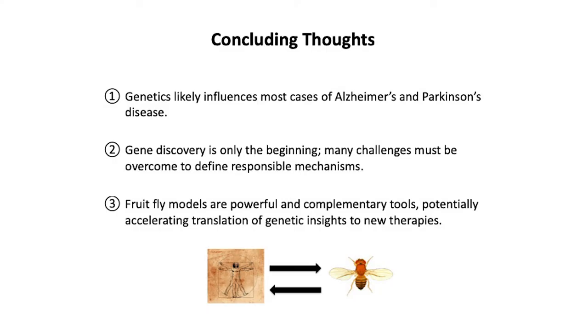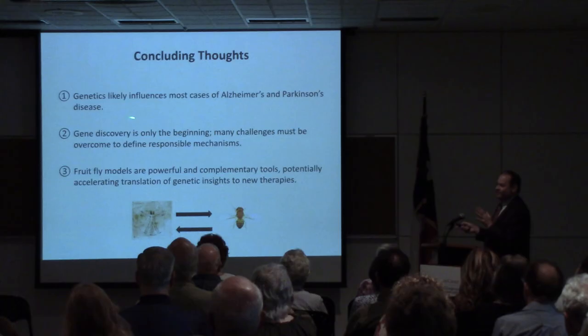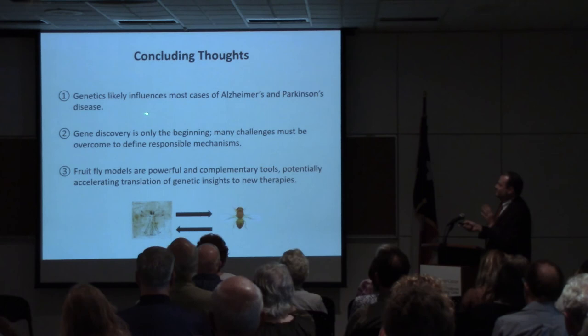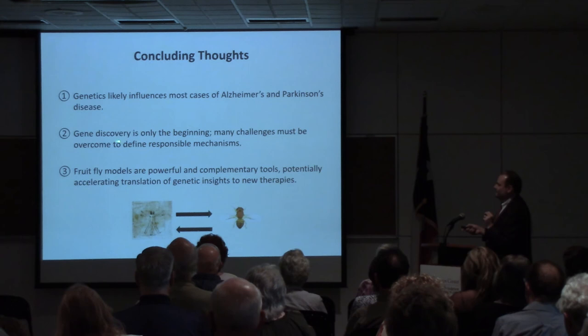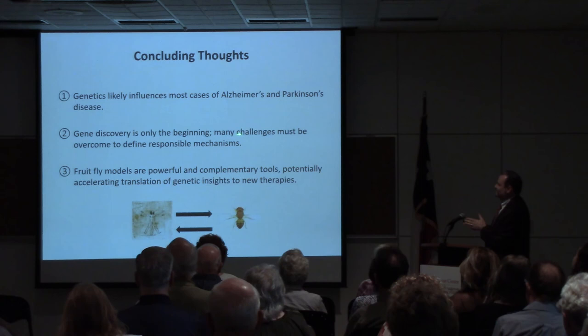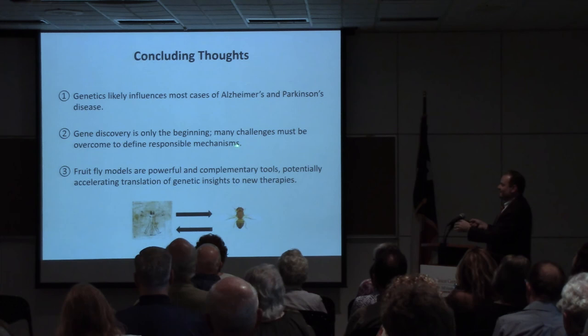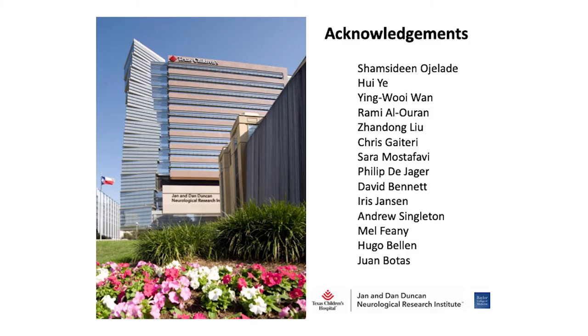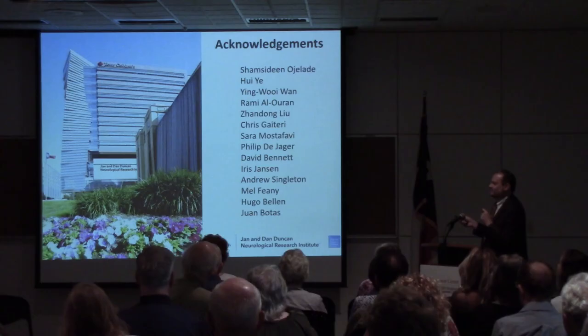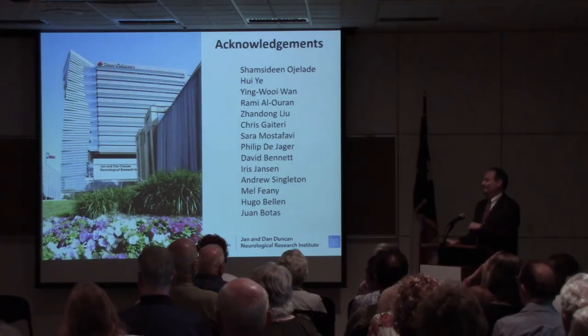To summarize: genetics likely influences most cases of Alzheimer's disease and Parkinson's disease. Gene discovery is only the beginning — many challenges must be overcome to truly understand mechanisms. Hopefully I've convinced you that fruit fly models are one approach to accelerate the translation of genetic insights to new therapies. Thank you to all of the people who provided data, and you can visit us at our institute in Houston — or visit Colm, which I prefer.